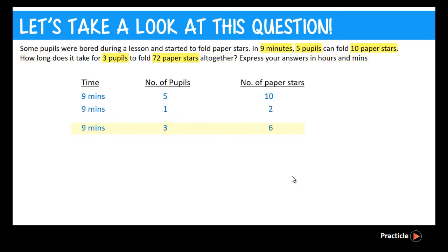So we are almost done with this question already. Remember, we need to find the amount of time it takes for 3 pupils to make 72 stars. So in order to solve for the answer, we need to ask ourselves, how do we get 72 from 6? We need to multiply 6 by 12, correct?